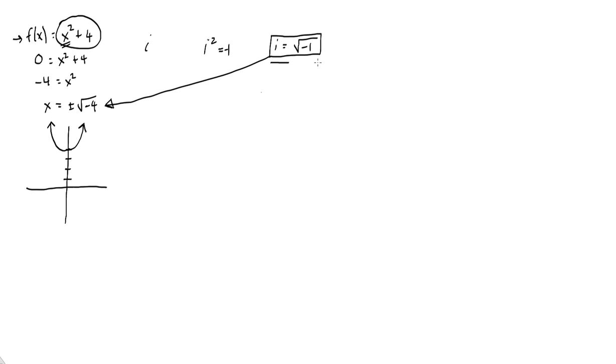So, let's get back to our definition here of i. i is the square root of negative one, and we'll see how that works. And we'll see how it works by actually using the zeros that we got for this function, specifically this part of it, the square root of negative four. So let's take a look at that.